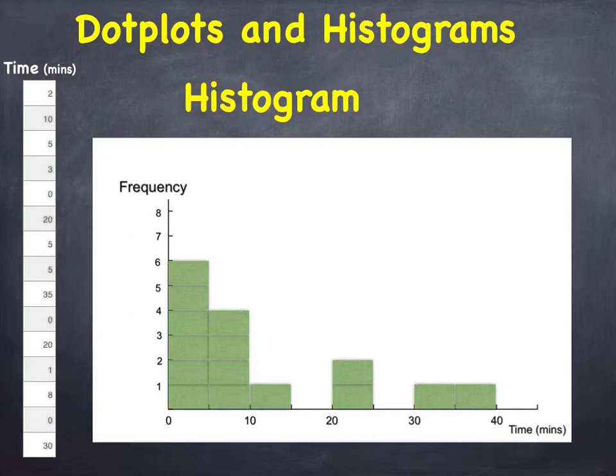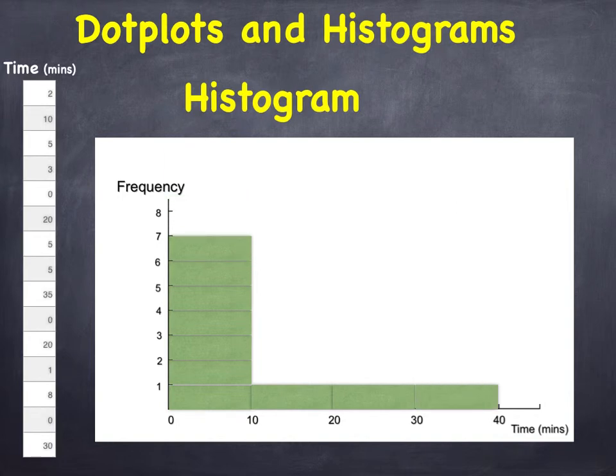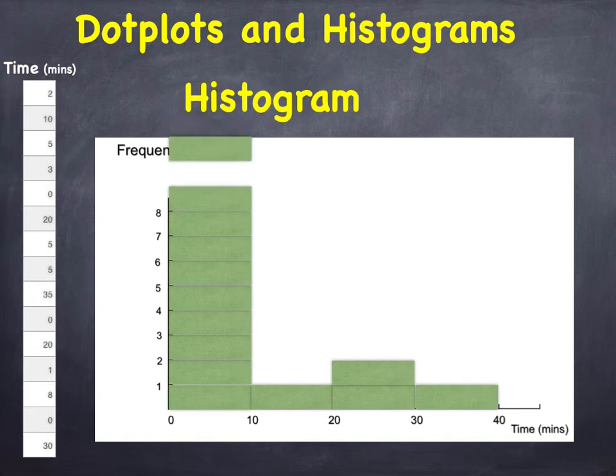Now, I needn't have chosen an interval of 5 units. I could perhaps have used 10. So, each brick would look like this. The first value, 2, goes into the 0 to 10 interval. And I'll put the 10 into the 10 to 20 interval. The 5 goes into the 0 to 10 interval. And so on. And that's the final histogram.